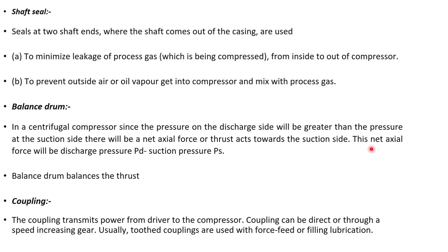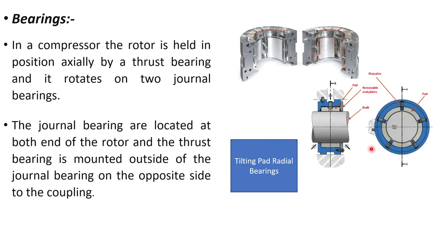Shaft seals are located on both ends of the shaft as well as between the casing sections, to minimize leakage of process gas and to prevent air or vapors from entering the compressor. The balance drum is used to balance the axial thrust, because the discharge pressure is higher than suction pressure. This differential pressure tries to push the rotor towards the suction side, and the balance drum counteracts this force. The coupling connects the compressor to the motor or other driving machine.